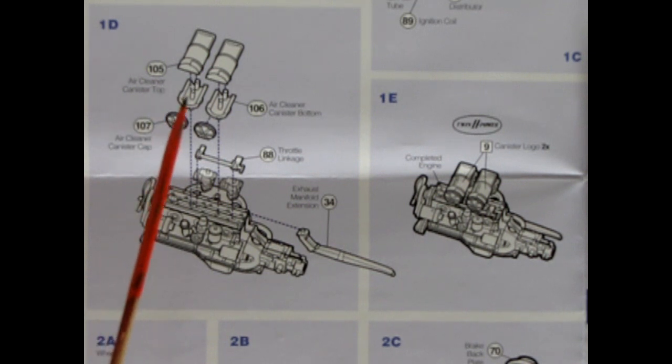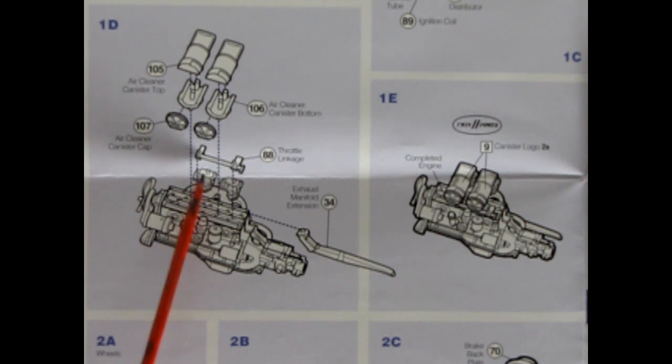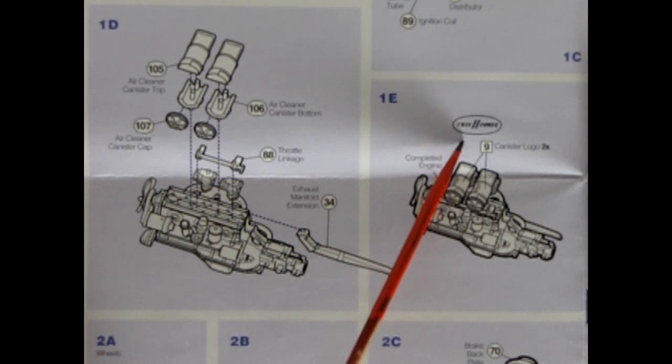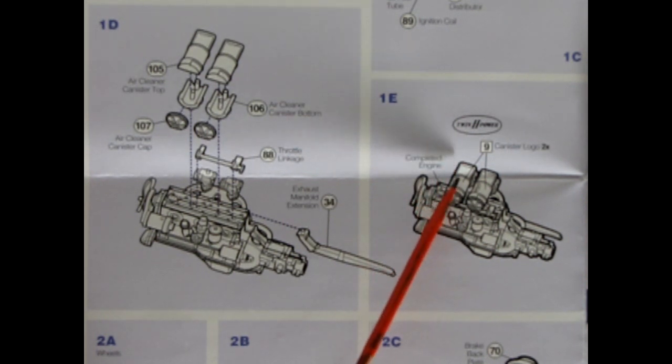Our next panel shows our three piece air cleaners going on. You've got a top, a bottom and an end cap and then we've got our throttle linkage as well as our exhaust manifold. This is followed up with the application of our Twin H power decals which go on both of the air cleaner canisters.